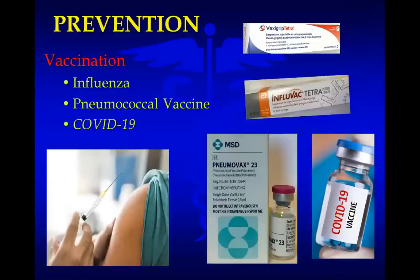Prevention involves modifying risk factors where possible — control diabetes, manage comorbidities. Vaccination is recommended: influenza vaccination for everyone, and pneumococcal vaccine for at-risk populations. The influenza vaccine formulation changes every year, so ensure you are getting the current year's vaccine (e.g., 2021 Vaxigrip, Influvac, or equivalent). Of course, there is now also the discussion of COVID-19 vaccination. Thank you for listening.